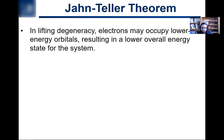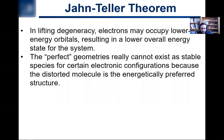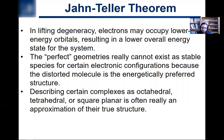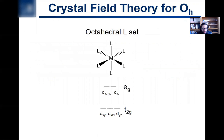That is the rationale behind the Jahn-Teller effect. A corollary of this is that perfect geometries can't exist as stable species for certain electronic configurations, because the distorted molecule is actually energetically preferred. So octahedral or tetrahedral — Oh and Td, or D4H — for certain degenerate electron configurations, the perfect geometry is actually just an approximation of the true structure. Let's take the example of an octahedral complex.